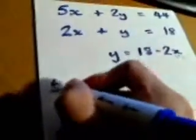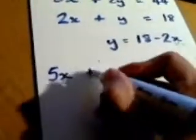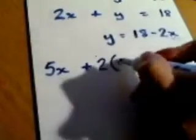And now I'm going back to the first equation, so I've got 5x plus two lots of y. Well y we've discovered is 18 take away 2x, and that will equal 44.